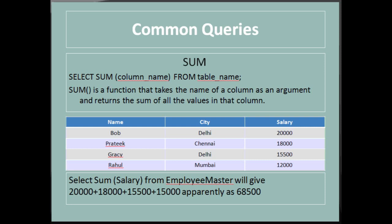Next is SUM: 'SELECT SUM(column_name) FROM table_name'. SUM is a function that takes the name of a column as an argument and returns the sum of all values in that column. For example, 'SELECT SUM(salary) FROM employee_master' will return the addition of salary values — 20,000 + 18,000 + 15,000 + 5,000 + 15,000 — giving 68,500 apparently.